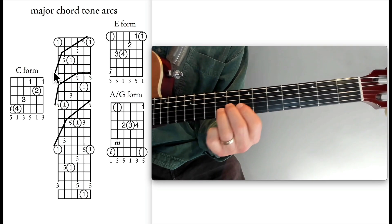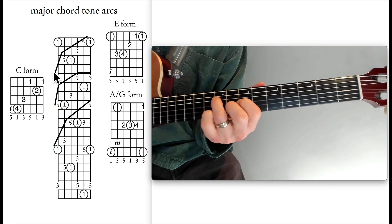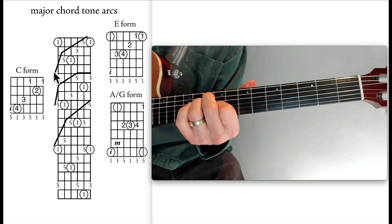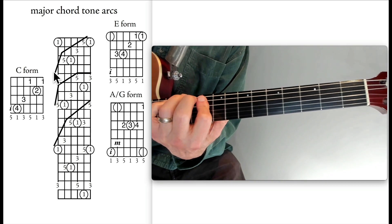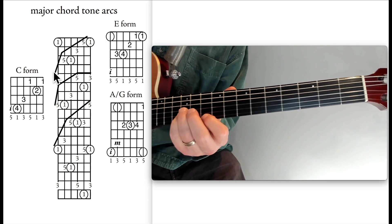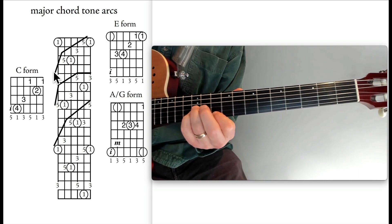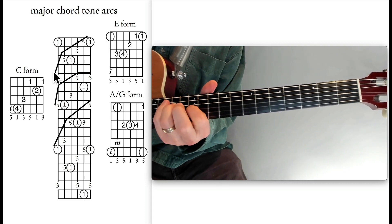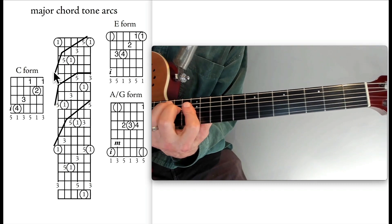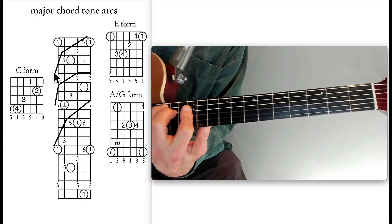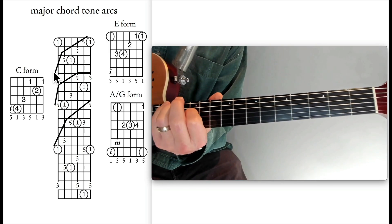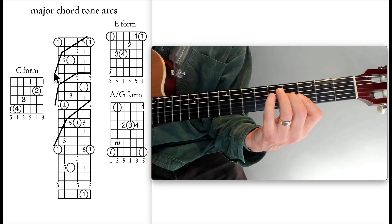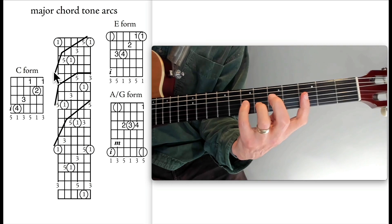In the A-G form on strings 3-2-1: G, C, G seventh, C, G. And when using these in improvising, they don't have to be in that order — they can be in reverse order as well.